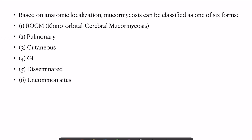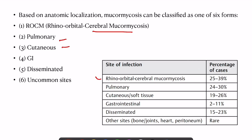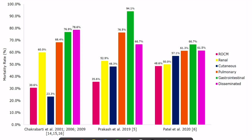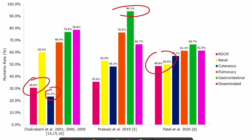Looking at clinical features, based on anatomy mucormycosis is classified into six forms: rhino-orbital-cerebral (ROCM), pulmonary, cutaneous, gastrointestinal, disseminated, and uncommon sites. In terms of incidence, ROCM accounts for approximately 40%, pulmonary 30%, cutaneous 26%, and GI and disseminated forms the rest. For prognosis, ROCM mortality ranges from 30–50%, GI has an extremely high mortality of up to 94%, while cutaneous has quite low mortality. Overall mortality remains around 40–60%.